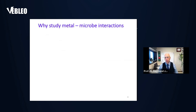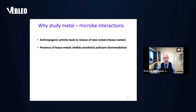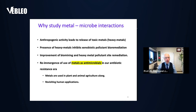I study metal-microbe interactions. Anthropogenic activity has released a lot of toxic metals into the environment. The presence of heavy metals inhibits the ability of microbes to degrade organic pollutants, so it inhibits bioremediation for oil spills and similar activities. If we understand this, we can improve bio-mining and metal pollution bioremediation. There is also a reemergence of the use of metal ions as antimicrobials because of our antibiotic resistance era. Metals are used in plant and animal agriculture for control of disease and pests and are now being reused in human applications as well.